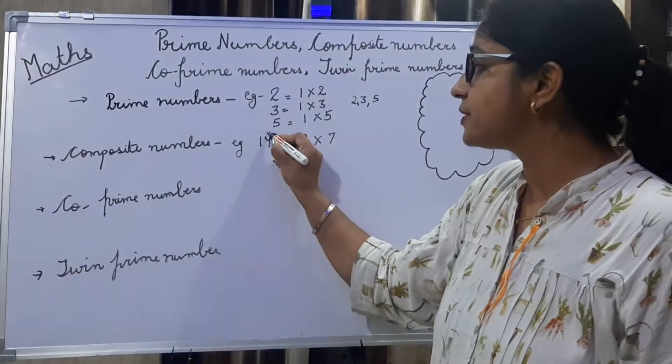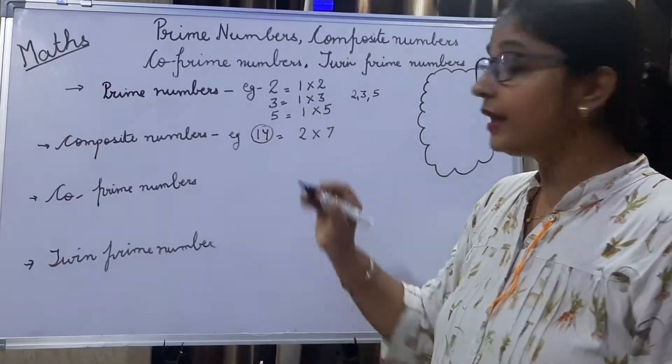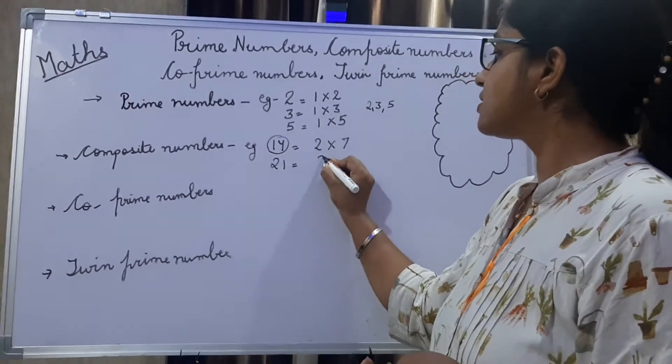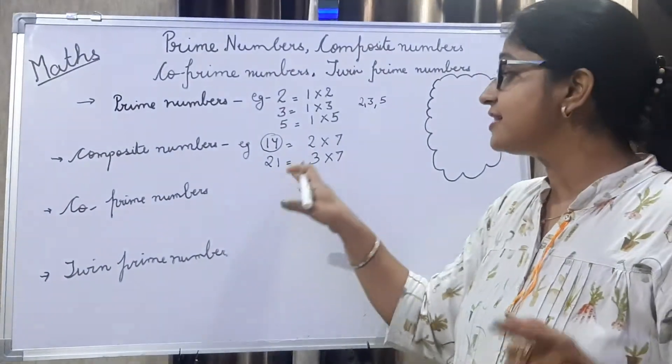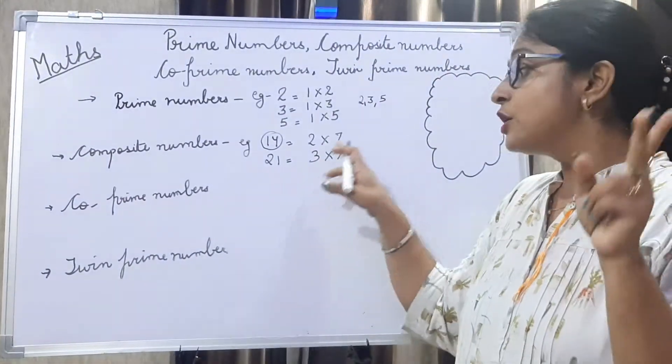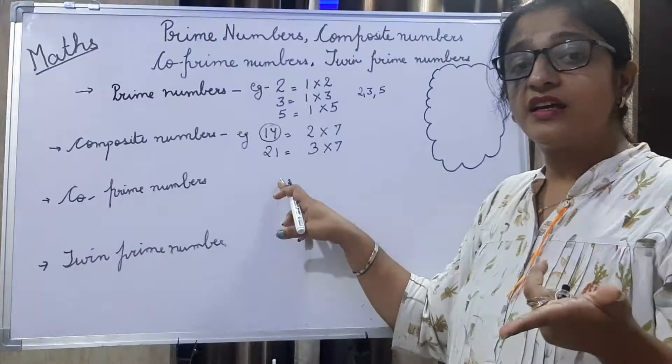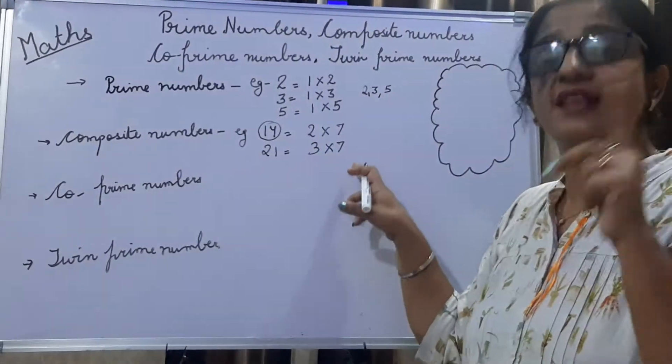So this means fourteen is a composite number. Next example, I take twenty-one, which is three and seven. So why is twenty-one composite? Because one is a factor, twenty-one itself is a factor, and three and seven are also there.